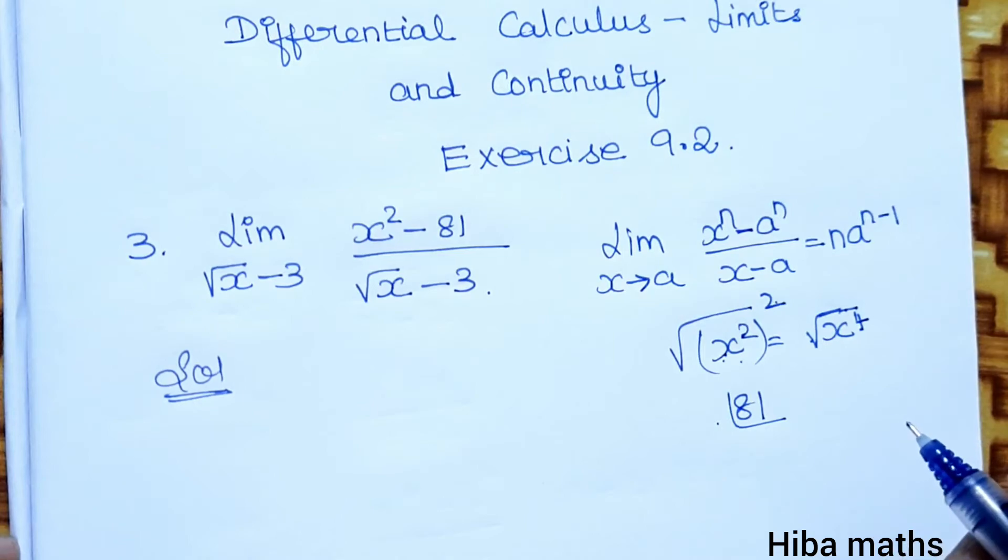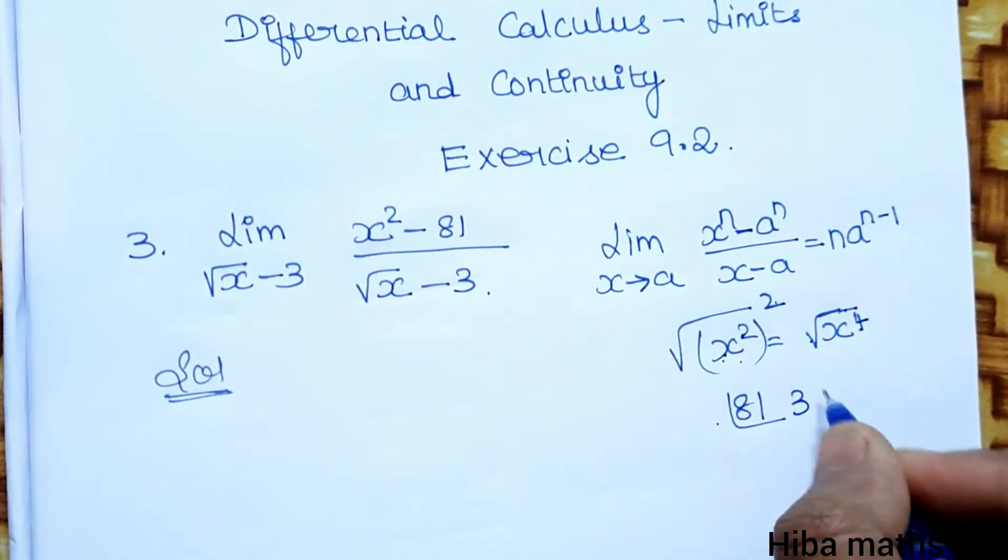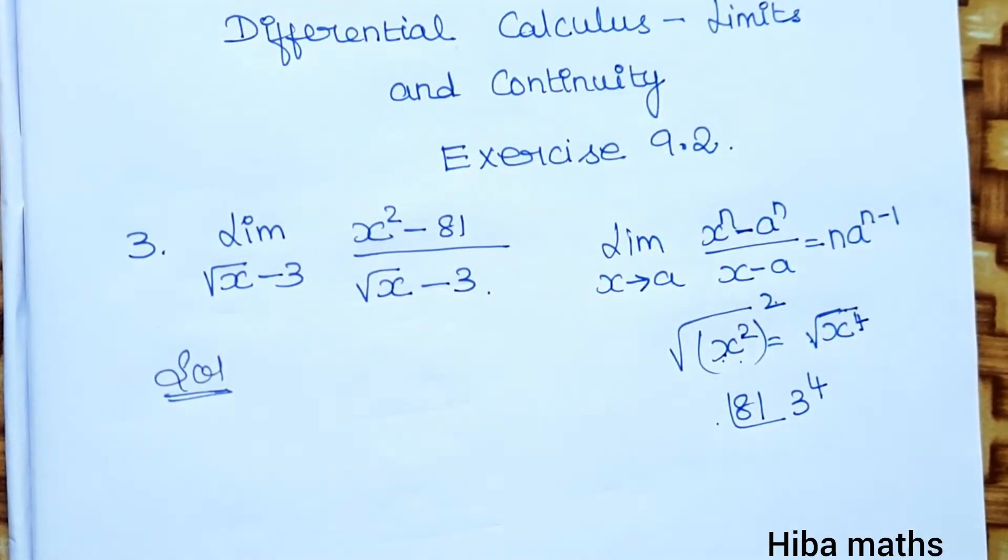Now 3 is 4. So 81 is how to multiply? 3 power n is 4.